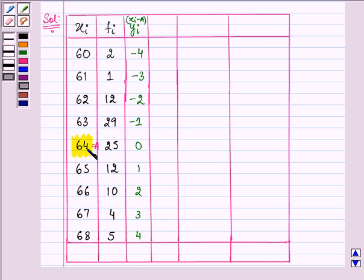Now I need to multiply fi with yi and that is 2 into minus 4, minus 8, 1 into minus 3, minus 3, 12 into minus 2, minus 24 and so on. With the help of shortcut method, you are actually simplifying your calculations.